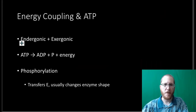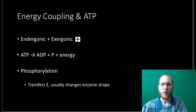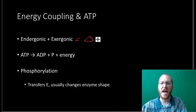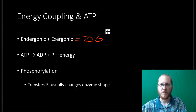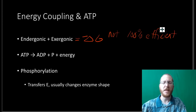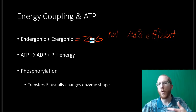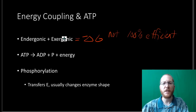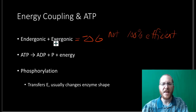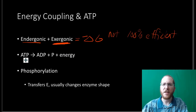Energy coupling pairs up endergonic and exergonic reactions. But remember, overall these together still have to have a negative delta G, because the reactions are not 100% efficient — we're going to have some heat loss and loss of energy. We have to account for that. It's kind of like if you want to buy something that's $10, you need to have like $15 because there's that hole in your pocket that loses money. So the exergonic reaction always has to be giving off more than the endergonic is taking in — it's always got to be a bit lopsided.